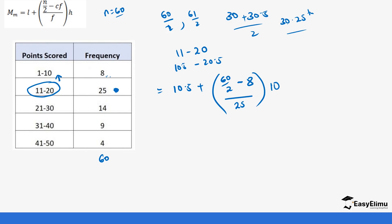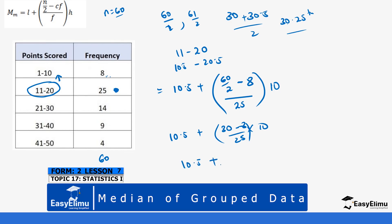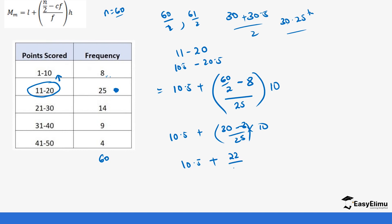Applying the formula: Median = 10.5 + [(60/2 − 8) / 25] × 10 = 10.5 + [(30 − 8) / 25] × 10 = 10.5 + [22/25] × 10 = 10.5 + 8.8 = 19.3. So our median is 19.3, which falls within the median class 11 to 20, confirming the answer.